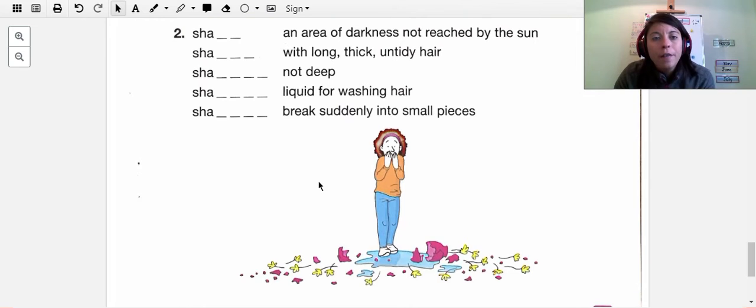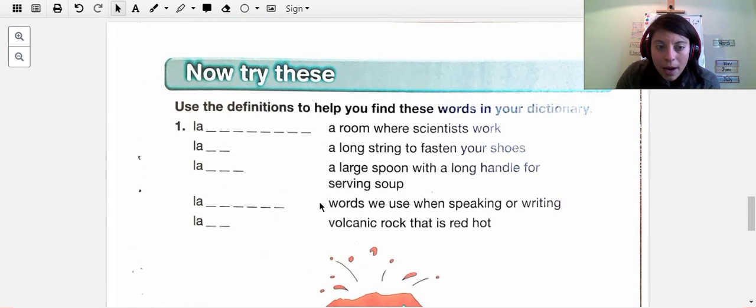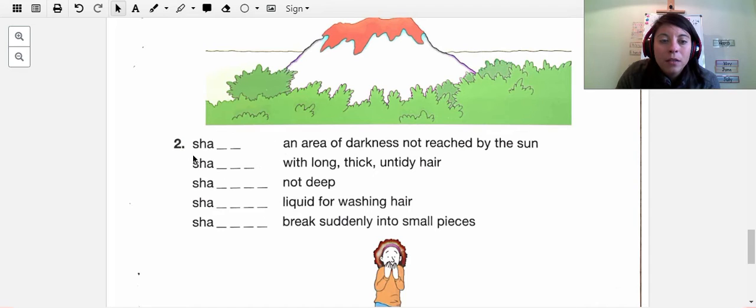And the last exercise that you have for today is on the same side, but instead of beginning with L-A it begins with S-H-A. An area of darkness not reached by the sun. S-H-A, two letters. S-H-A with three more letters, with long, thick, untidy hair. Oh my god.